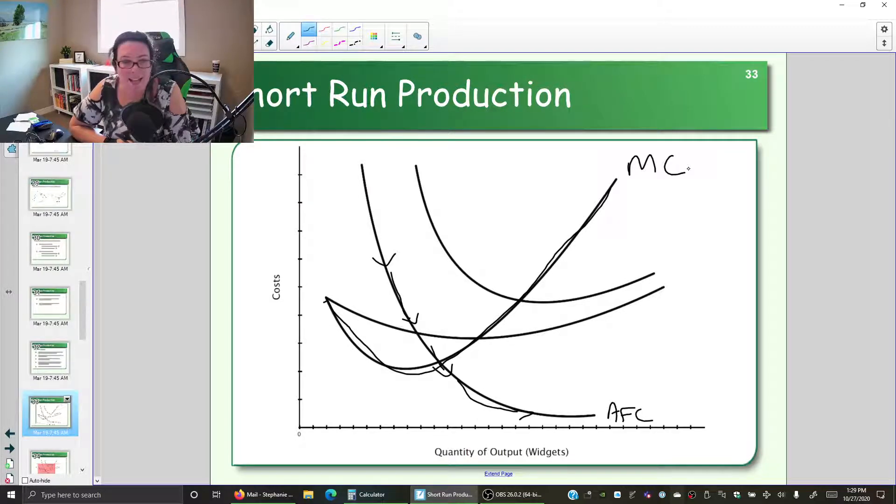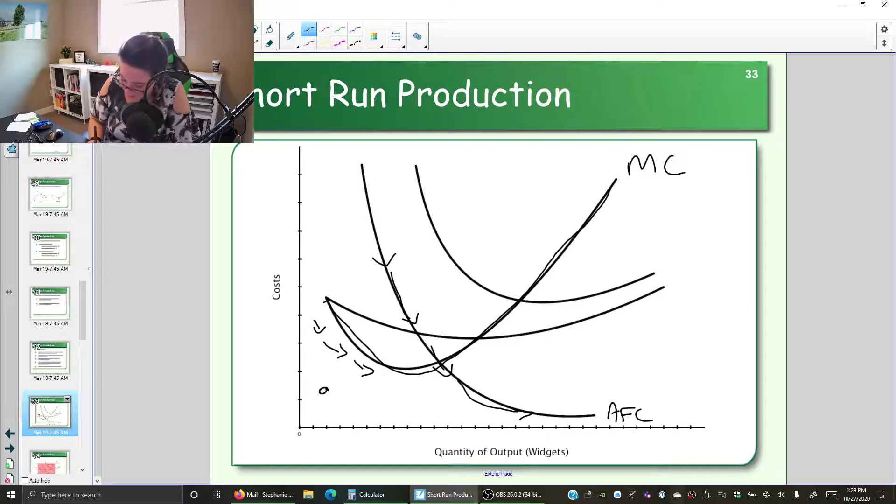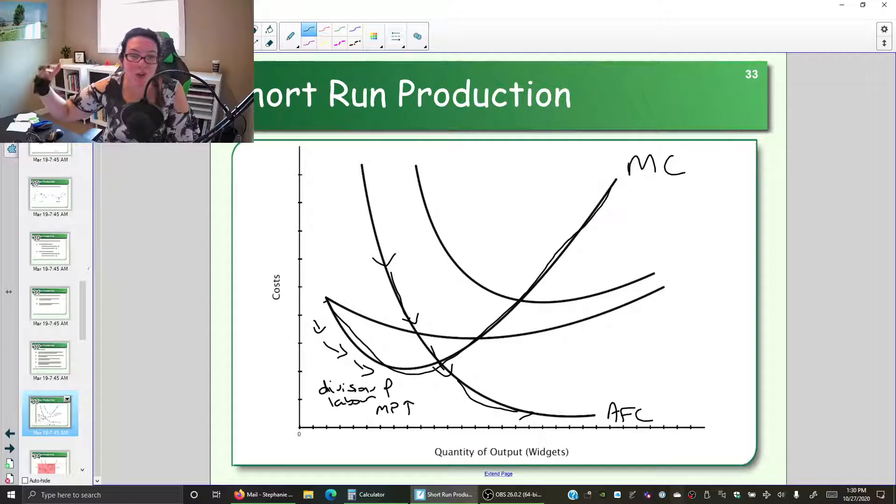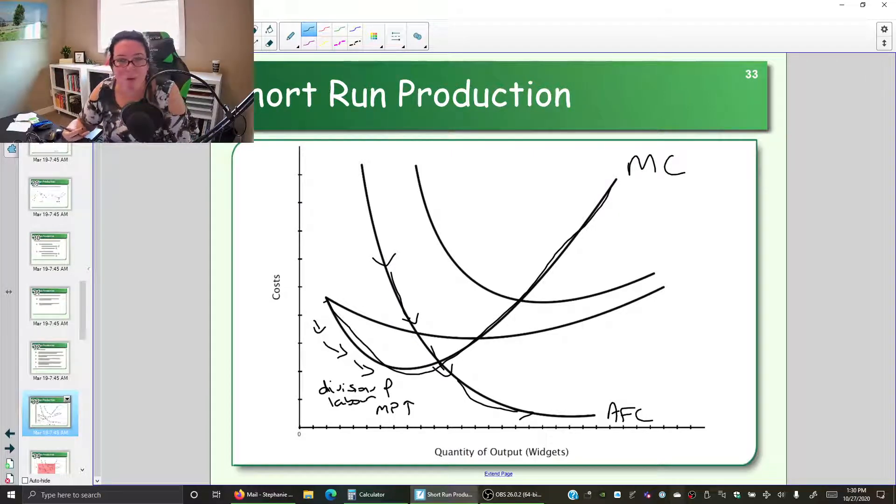It has this checkmark shape because your extra cost to make one more unit declines when you have divisions of labor. We're dividing up the jobs into different specialized tasks, and that makes the marginal product go up. We get more from each additional worker, and the extra cost of the worker gets put into more and more products. So the extra cost to make one more product is less.